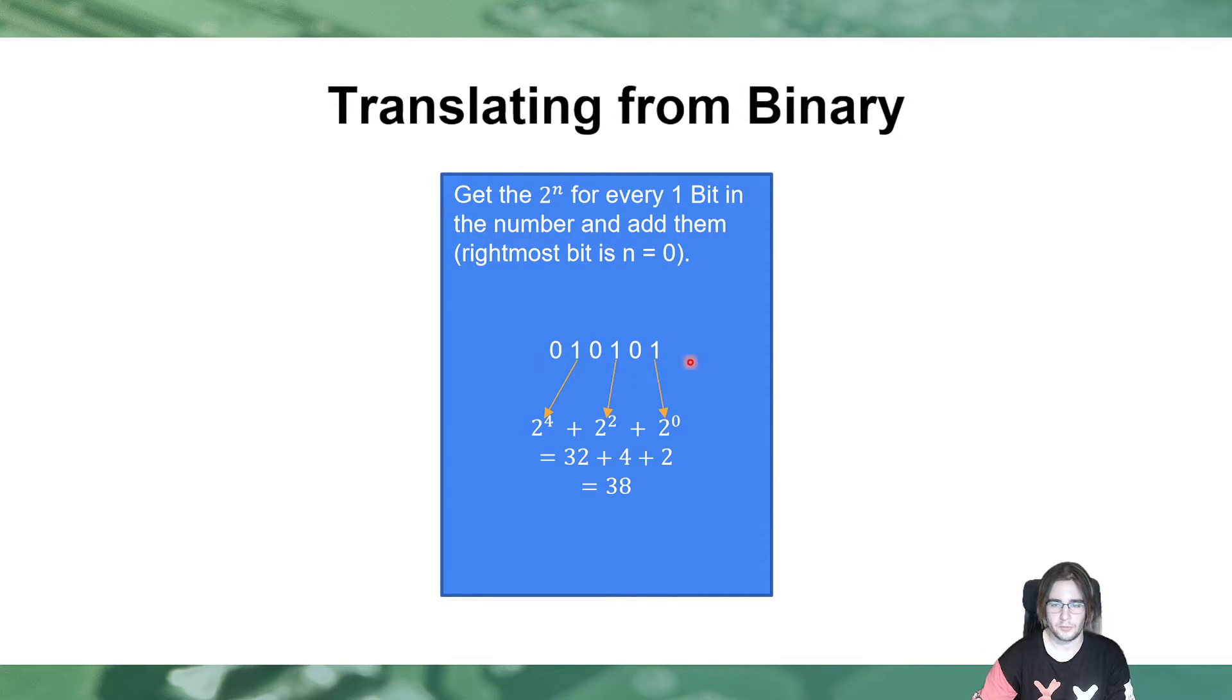So, in this case, with this number, we have 2 to the power of 0, which is here, plus 2 to the power of 2, so we have 0, 1, 2, that's the second bit, and 3, 4, 2 to the power of 4, also, is a 1 bit, which we also have, and now, those 3, we add them together, as 32 plus 4 plus 2, equals 38, so, we just translate it like this.